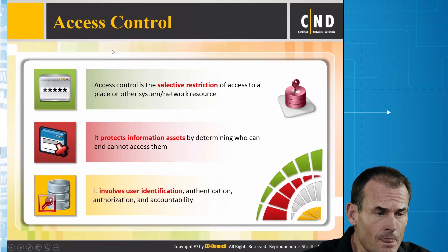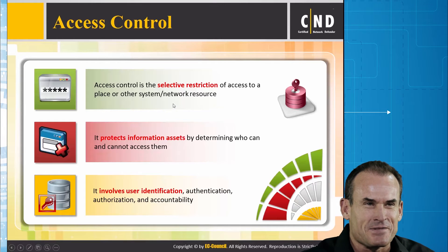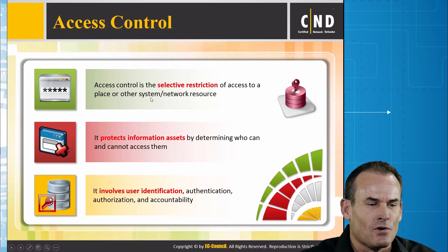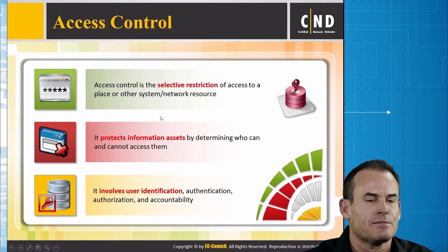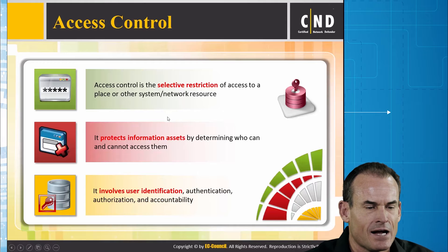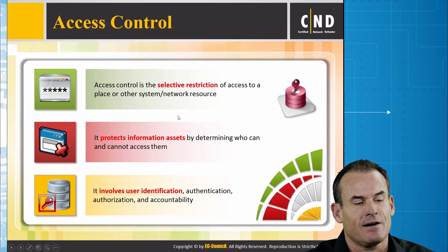Access control is the selective restriction of access to a place or other system or network resource. It protects information assets by determining who can and cannot access them. It involves user identification, authentication, authorization, and accountability.